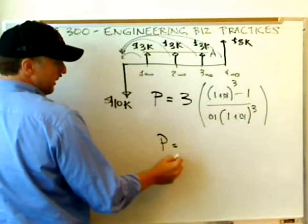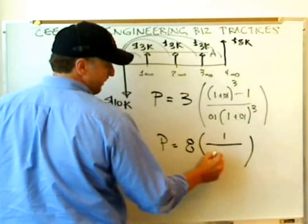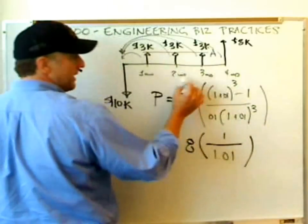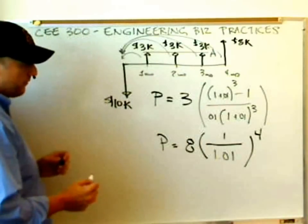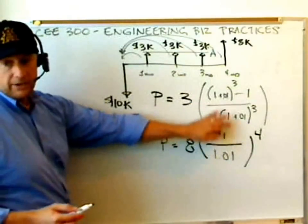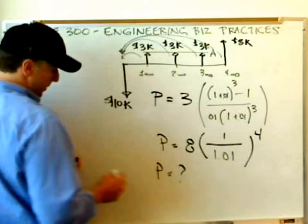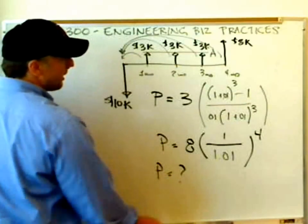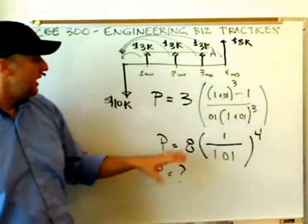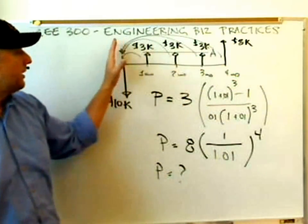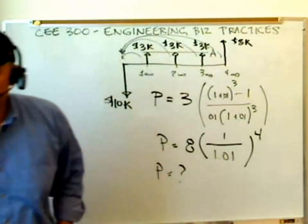For this last future payment, we can use the formula that I just erased, raised to the, but now it's four months in the future, so we have to raise that to the four. Perform these calculations at home. Post your answer on the blog in response or as a comment in reply to this posting. Let me know what you think the present value of this summer business is. Thank you very much.